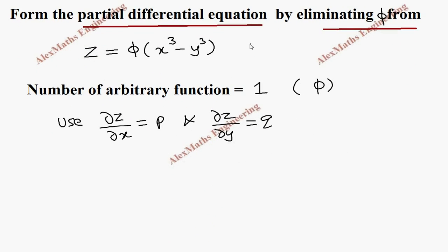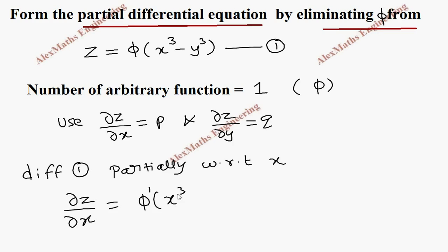Let's take this as the first expression and we are going to differentiate this one partially with respect to x. So ∂z/∂x equals phi derivative, phi dash, and the inner function should be written as it is. Then using the chain rule we have to find its derivative and write it as a product here.